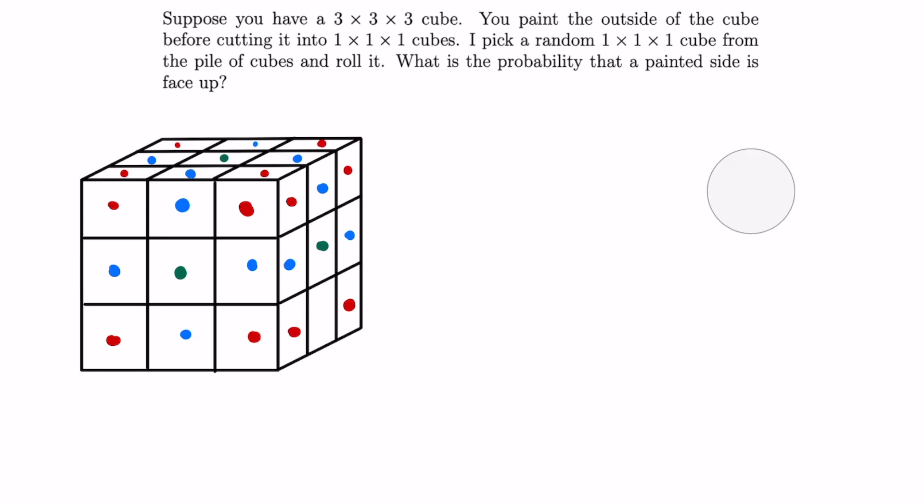Alright, so let's try to generalize this result to an n by n by n cube. If we paint the outer layer of an n by n by n cube, we'll again have 8 edge cubes that each have 3 sides painted on it.